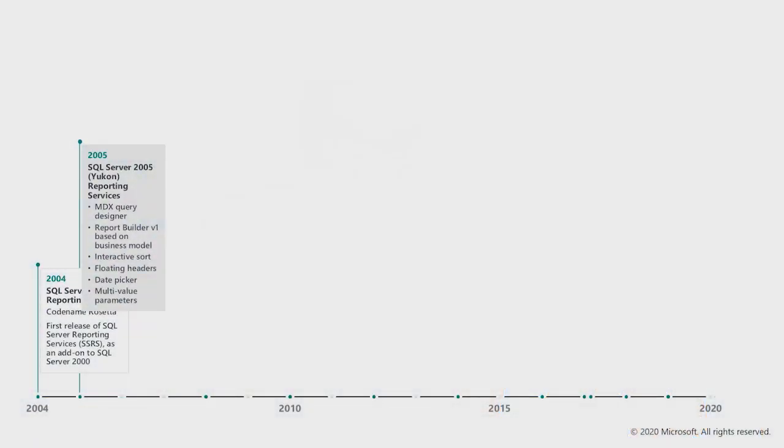Prior to you coming on board with the engineering group, we saw the Yukon release for SQL Server in 2005. Already some enhancements were coming through due to a lot of feature requests. Things like a date picker and multi-valued parameters were introduced, and we also saw Report Builder — what we'd call version one. Report Builder version one was built on top of semantic models, which you could create inside Reporting Services, and Report Builder was the experience created to consume those models more easily.